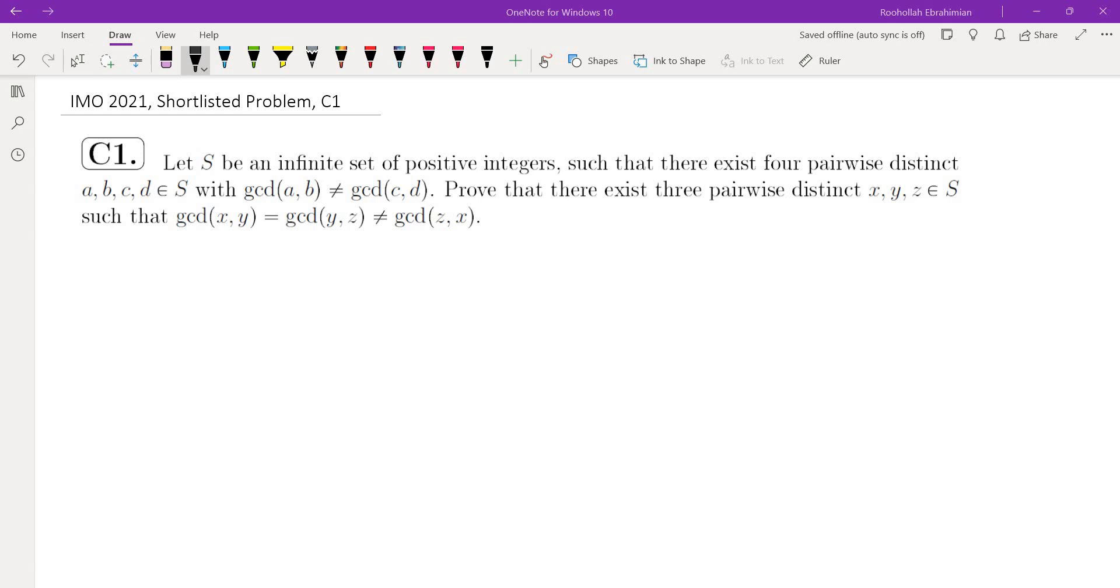The first thing that came to mind when I looked at this problem was the fact that it says it's an infinite set. So somehow I need to use the fact that it's an infinite set, and one way of using that fact is to use pigeonhole principle. What does that mean? It means something has finitely many possibilities and because we have infinitely many numbers, infinitely many of those must have that certain possibility.